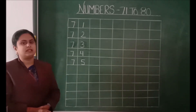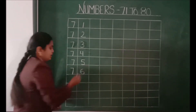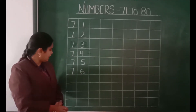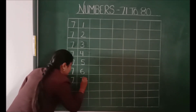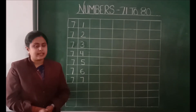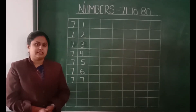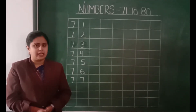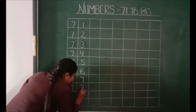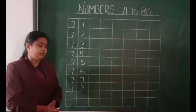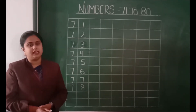Children, after number 75 what will come? 76. After 76, 77. After 77, what will come? 78. To write number 78 we will write 78. After 78, 79.